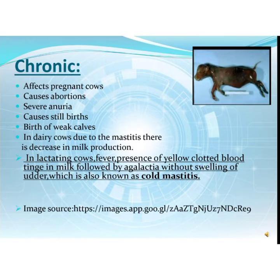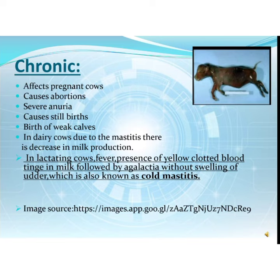In chronic cases, it affects pregnant cows and causes abortions, stillbirth of weak calves. In dairy cows, due to mastitis, there is a decrease in milk production. In lactating cows, there is fever and presence of yellow clotted blood-tinged milk, followed by agalactia without swelling of the udder, which is also known as cold mastitis.